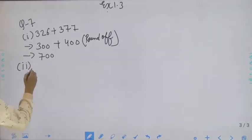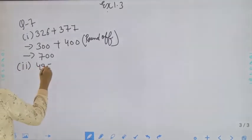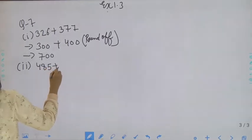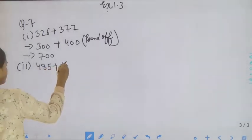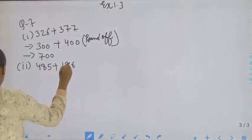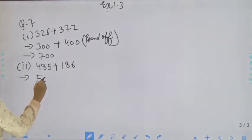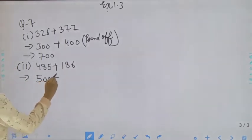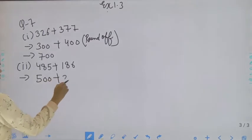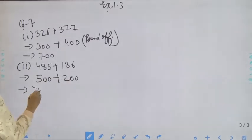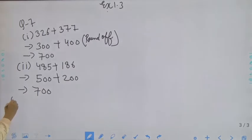Now move to the second part, that is 485 plus 186. So students, 485 round off will become 500, and 186 will become 200. So the answer is 700. Now move to the third part.